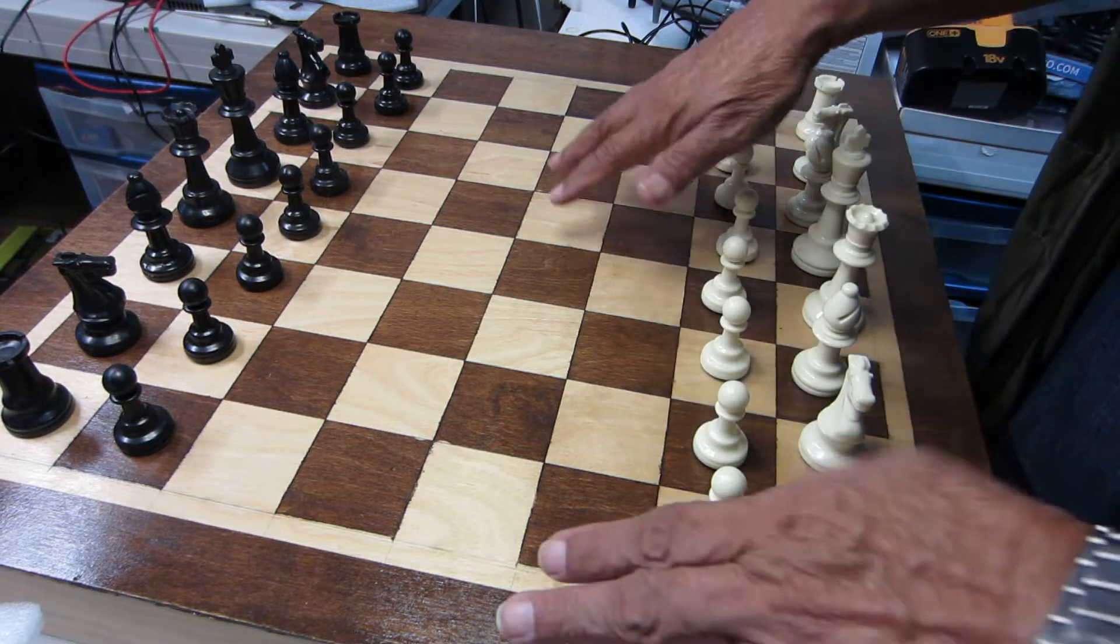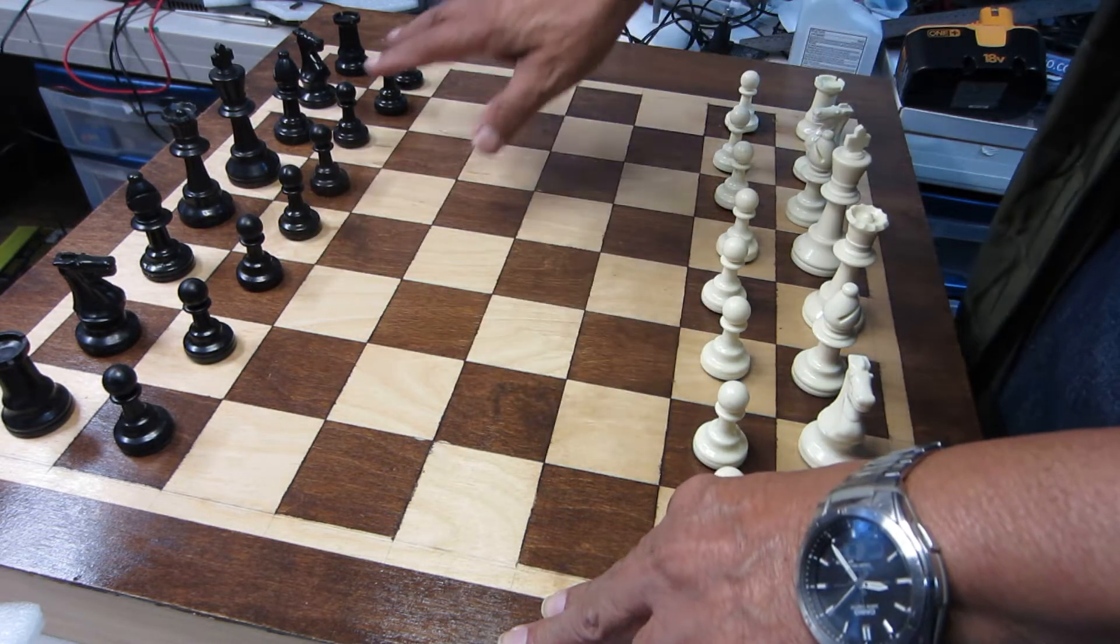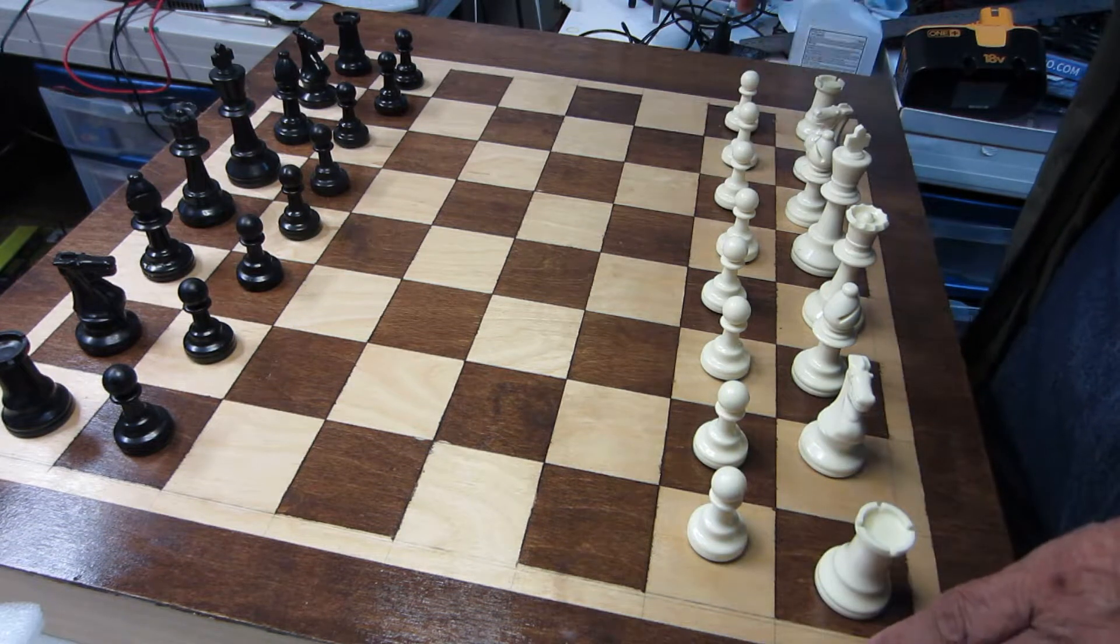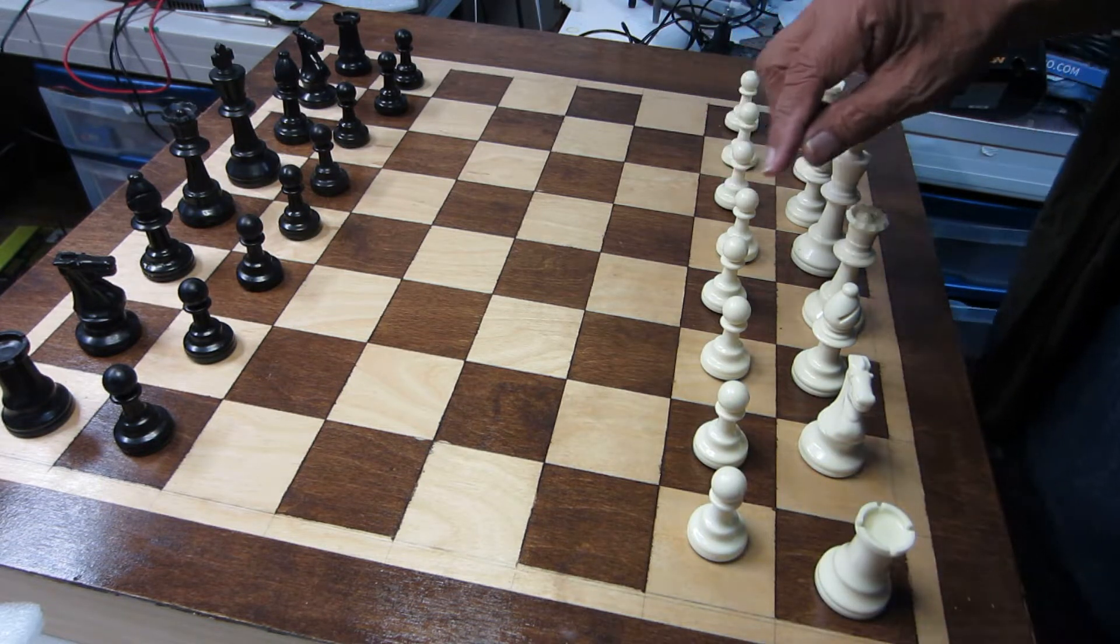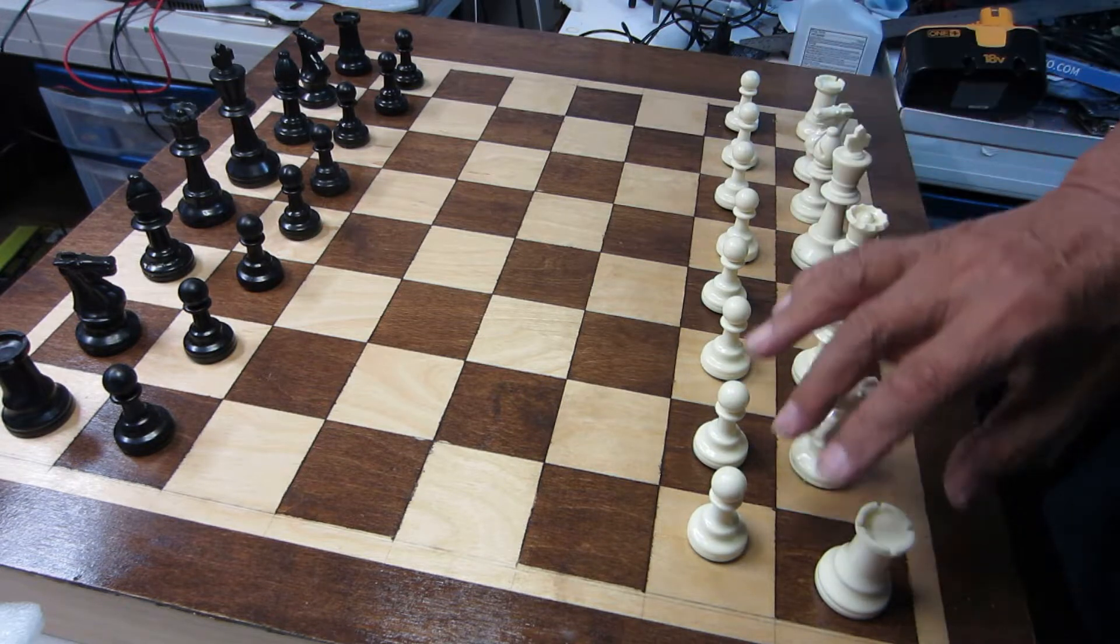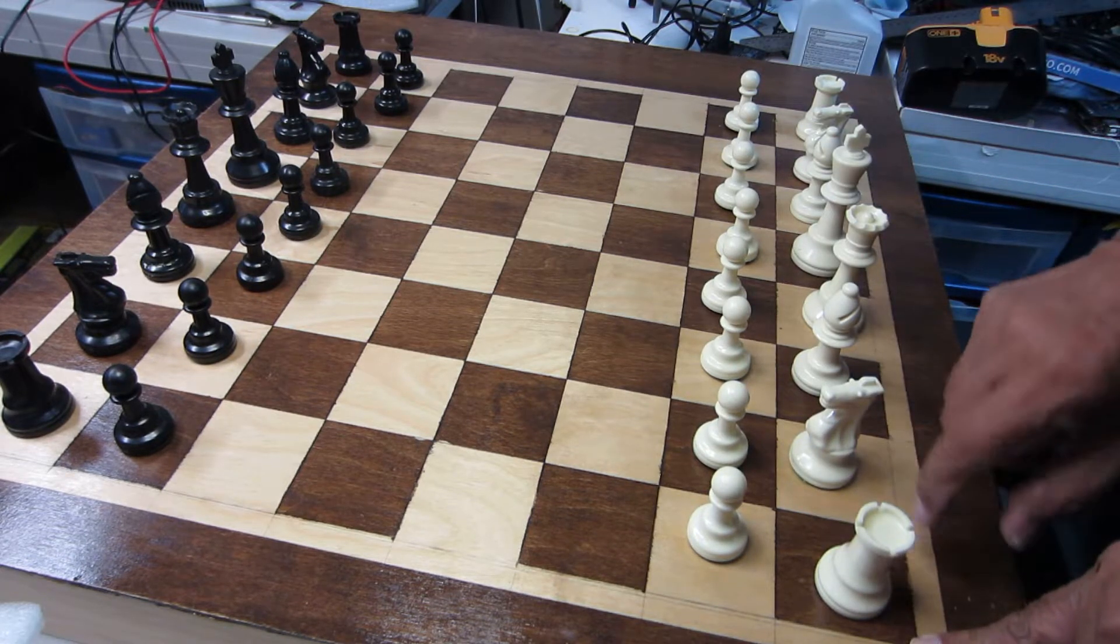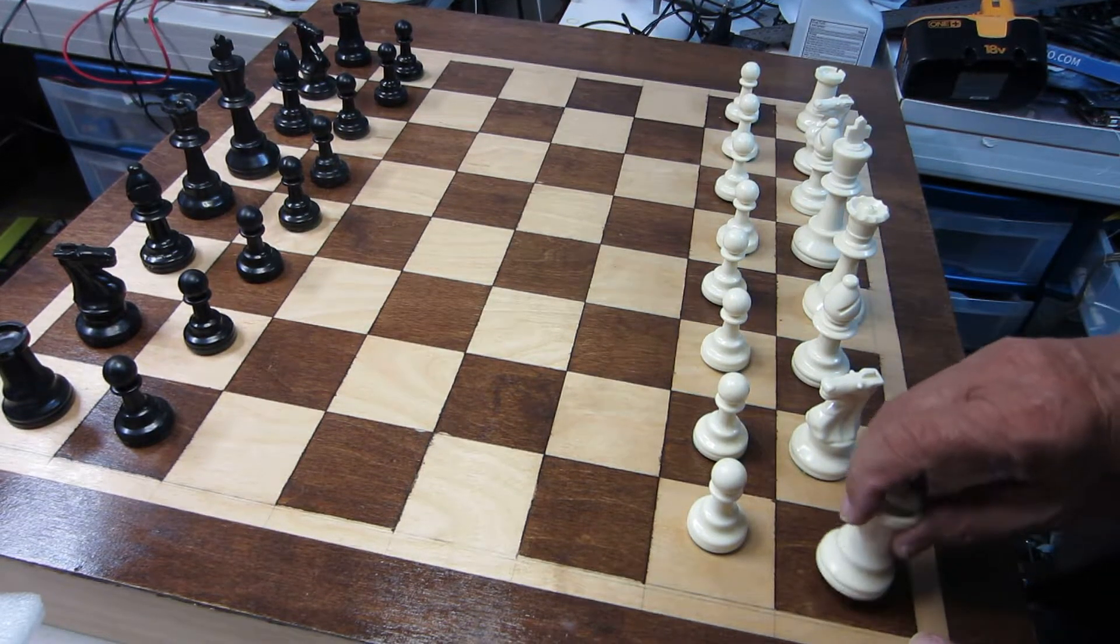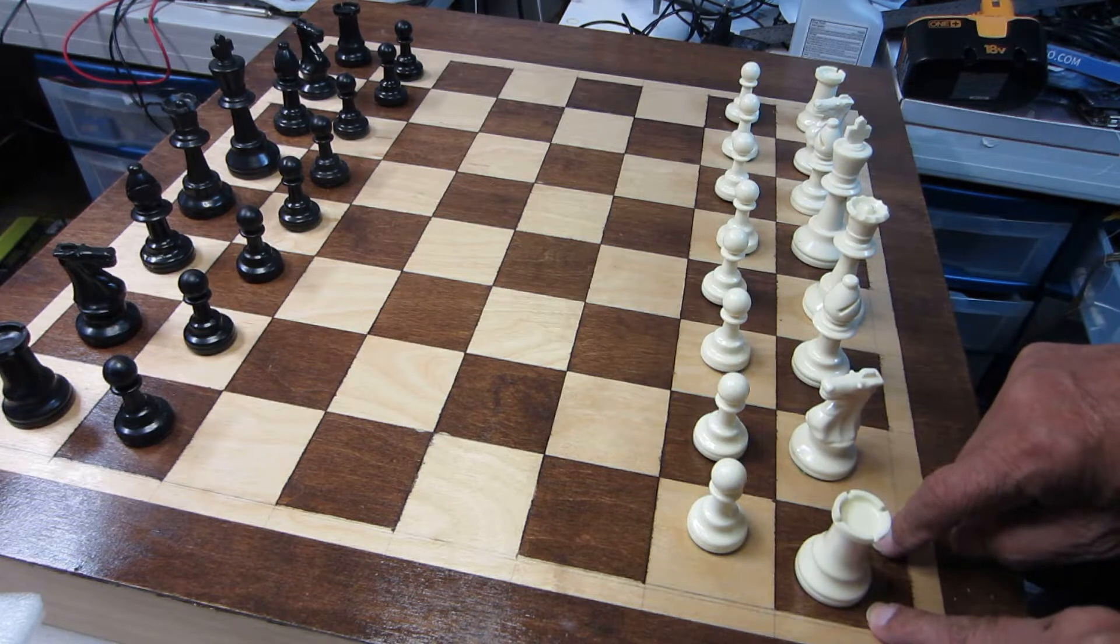So at the start of the game everything will be initialized according to the setup. You could see right now, let's say on a1 you'll have a rook. This is tracked and recorded in the software.